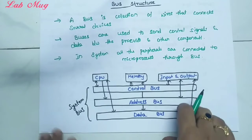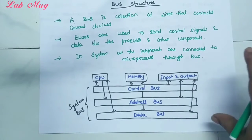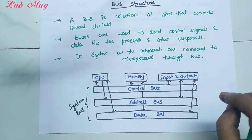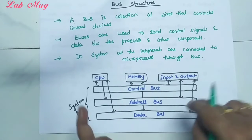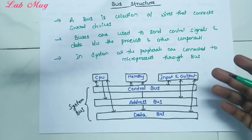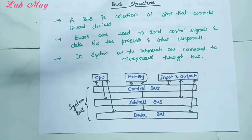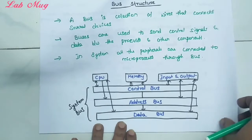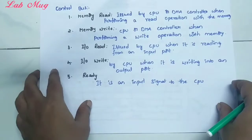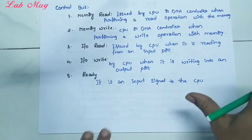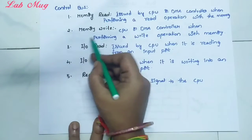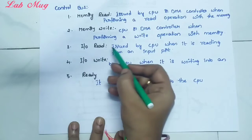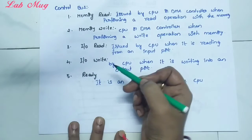The main bus structures are control bus, address bus, and data bus. Here CPU, memory, and input/output devices are connected. The control bus has four main signals: memory read, memory write, input/output read, input/output write - and also a ready signal, so totally five signals. These are the main operations for the control bus.